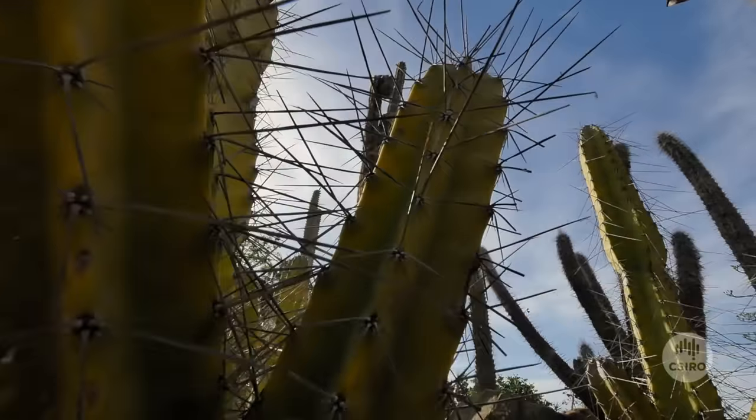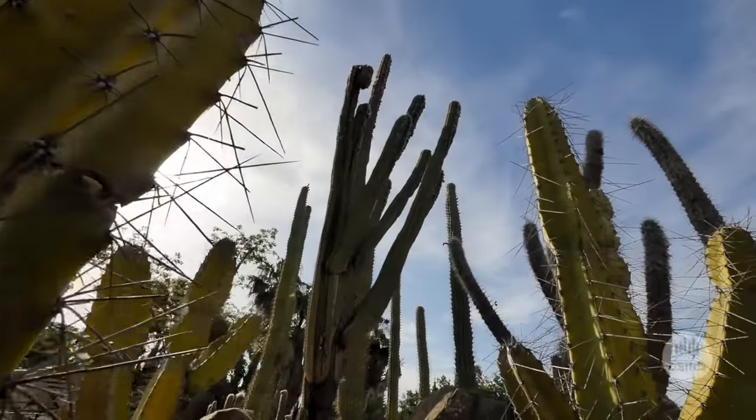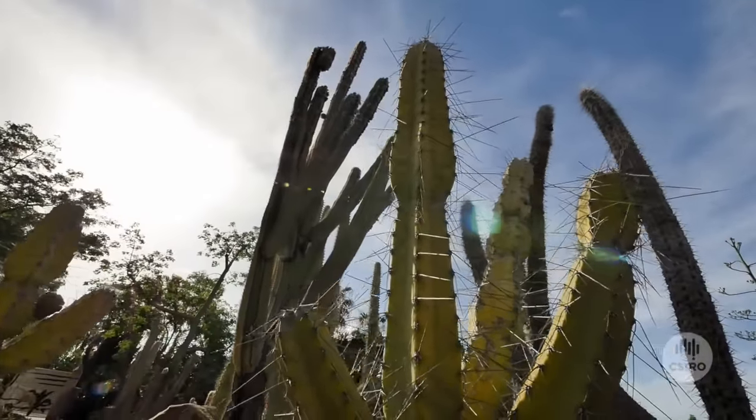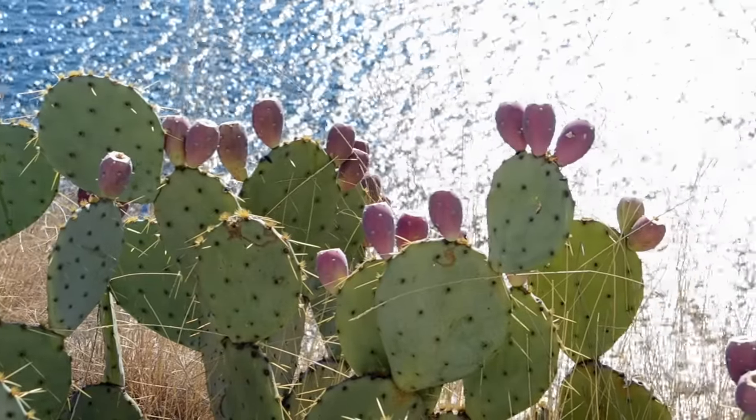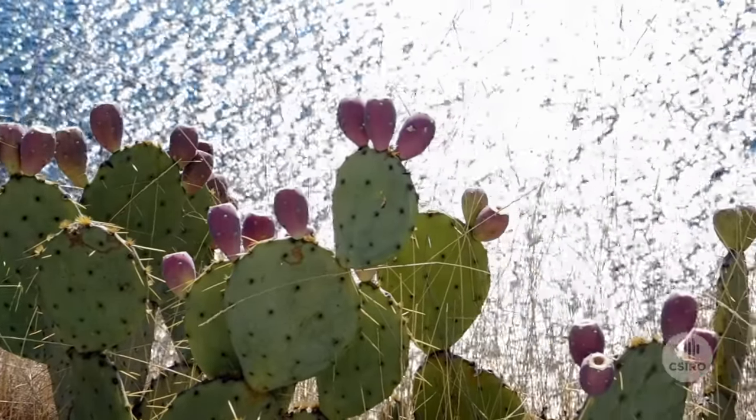So these membranes are inspired by the cactus, where in hot, arid conditions, the cracks on the surface actually close up to prevent the water from evaporating out. And then in cooler conditions, the cracks actually open up so that the water can enter into the membranes and hydrate them.